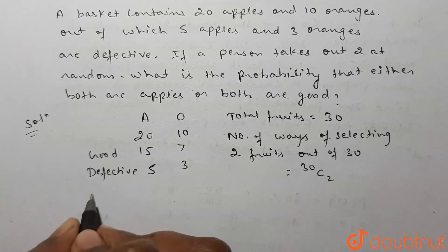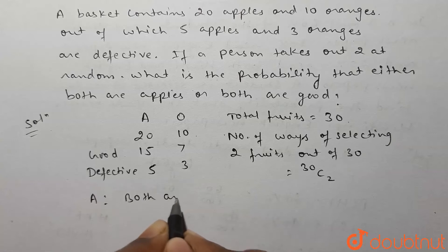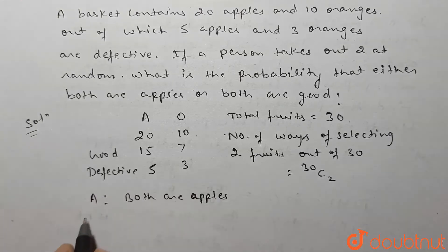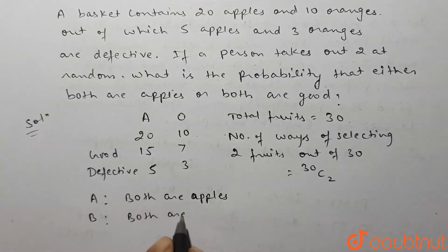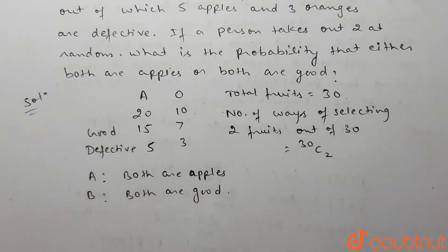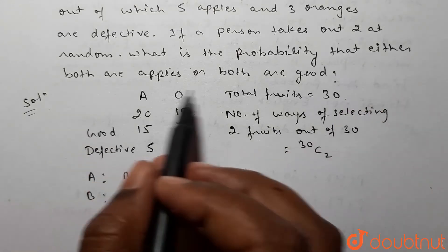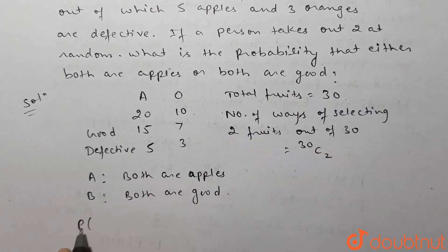Let A be the event that both fruits are apples, and let B be the event that both fruits are good. We have to find the probability that either both are apples or both are good, that means probability of A union B.